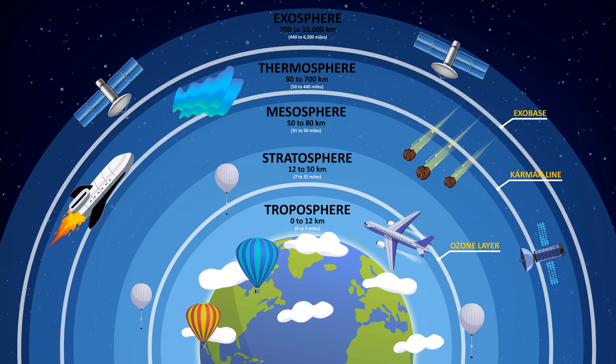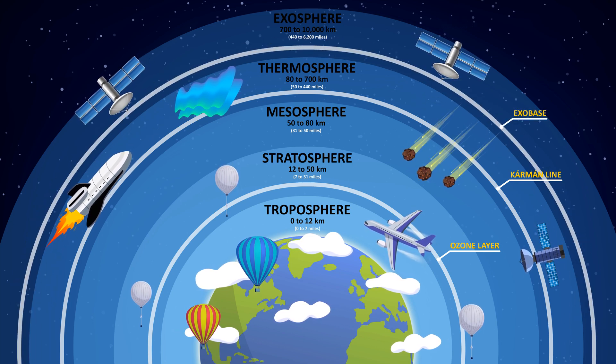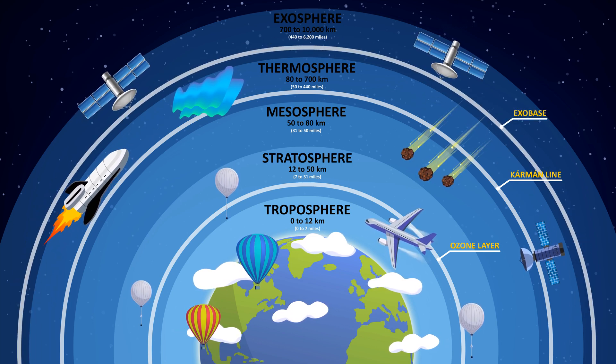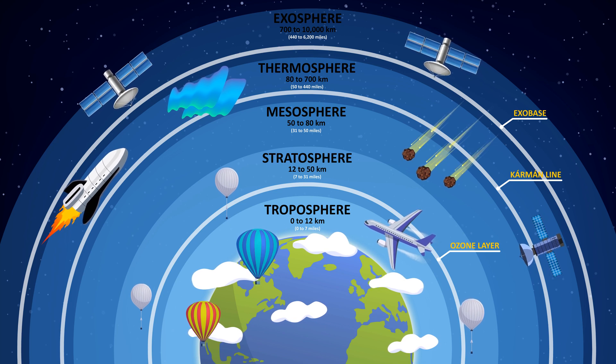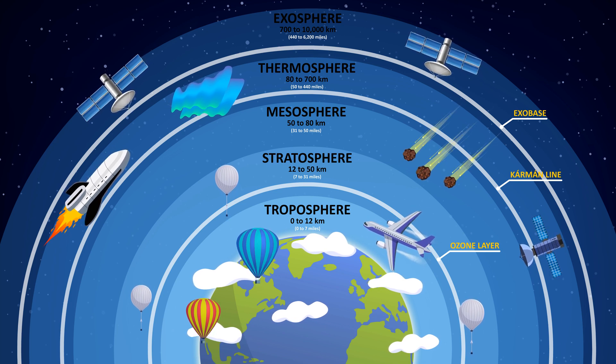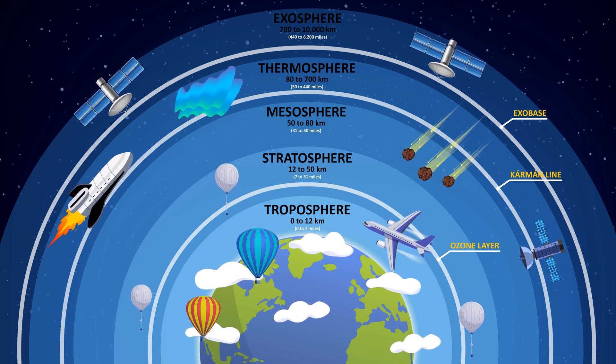Exobase: the lower boundary of the exosphere is called the exobase. It is also called the critical altitude, as this is the altitude where barometric conditions no longer apply.